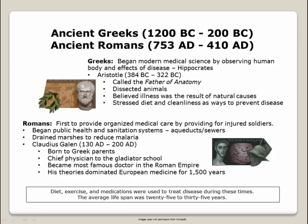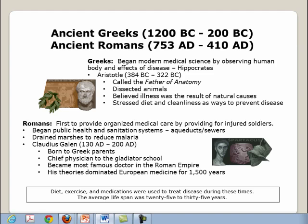The Greeks began modern medical science by observing the human body and the effects of disease. Hippocrates was one of the most famous Greeks. Another famous Greek was Aristotle, who lived from 384 B.C. to 322 B.C. He was called the father of anatomy. Aristotle dissected animals and believed illness was the result of natural causes. He stressed diet and cleanliness as ways to prevent disease.